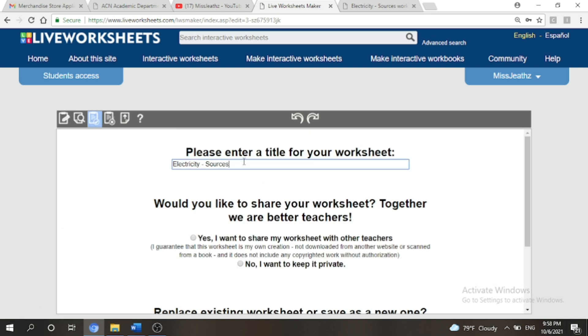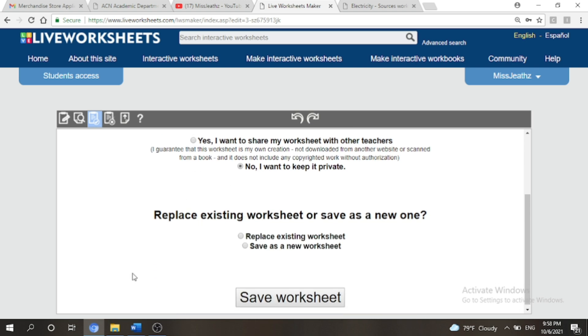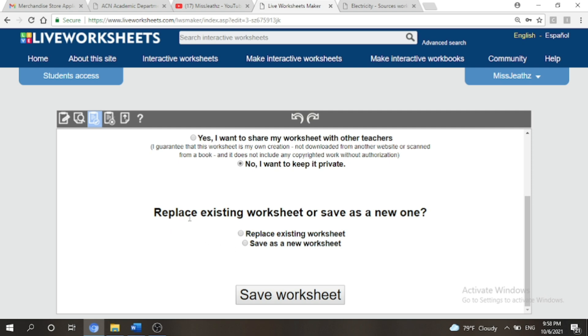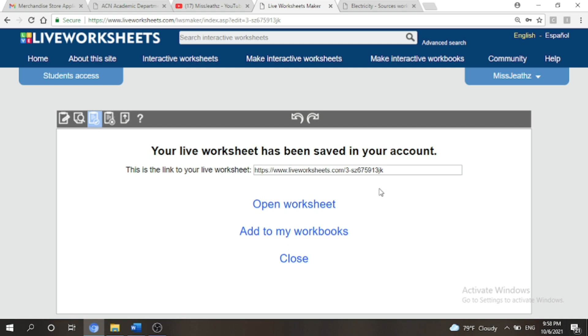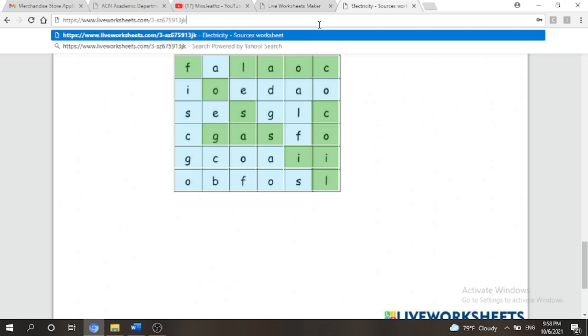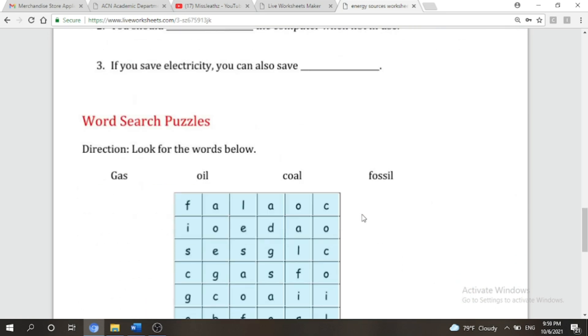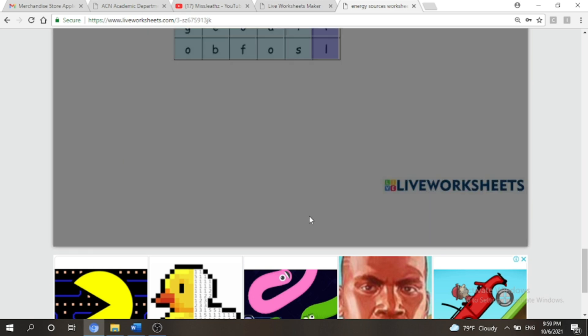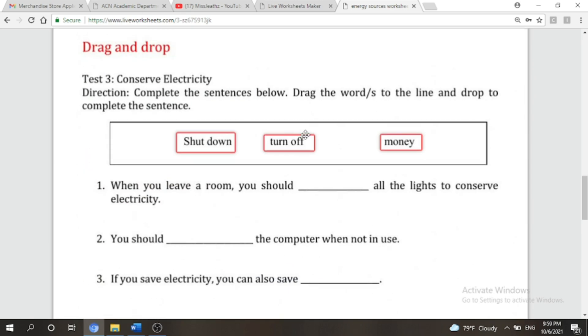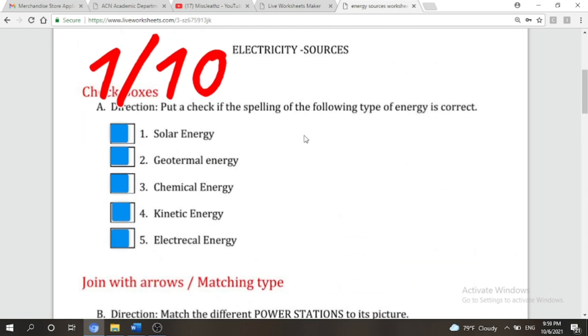Now you will be given an option to change the title of the worksheet and if you still want to keep it private, and then if you want to replace the existing worksheet or save it as a new worksheet. So you will be given an option for that. So save worksheet. Let's check it again. Let's answer the error. It's already correct.